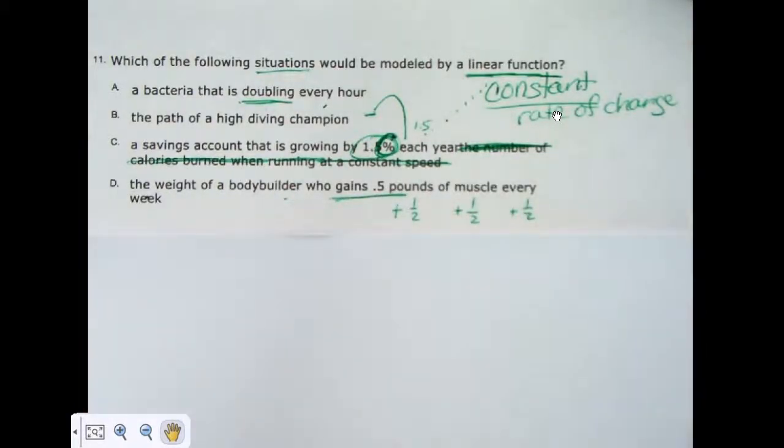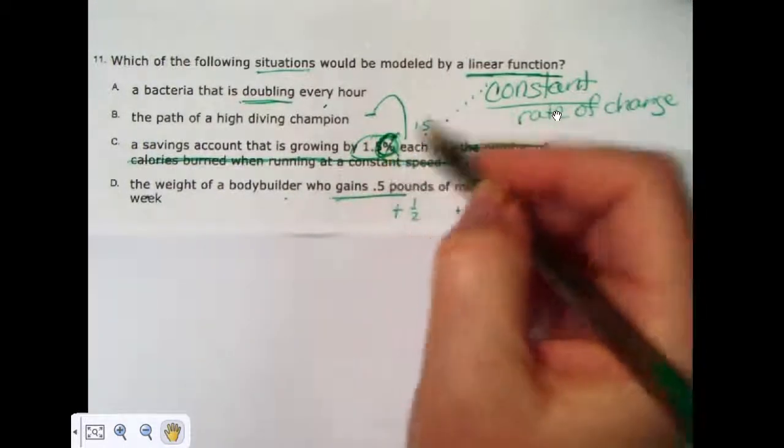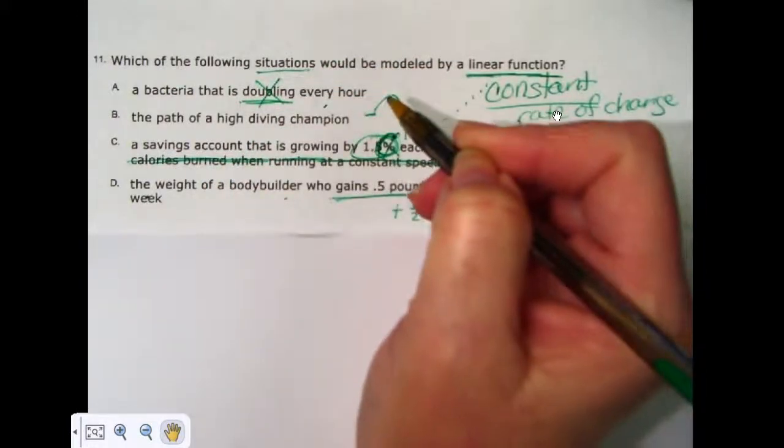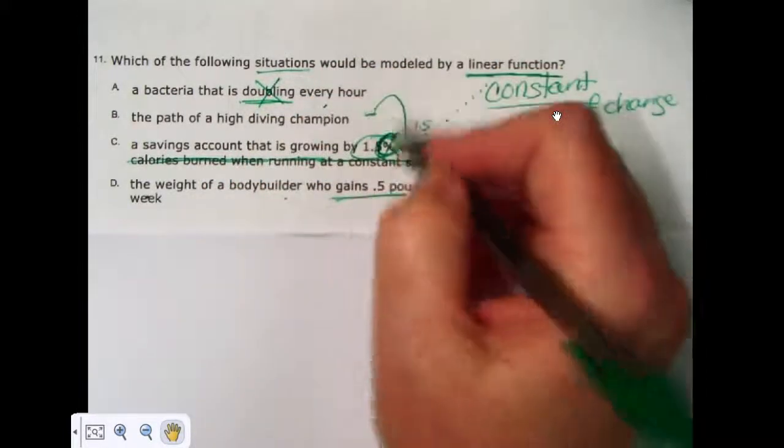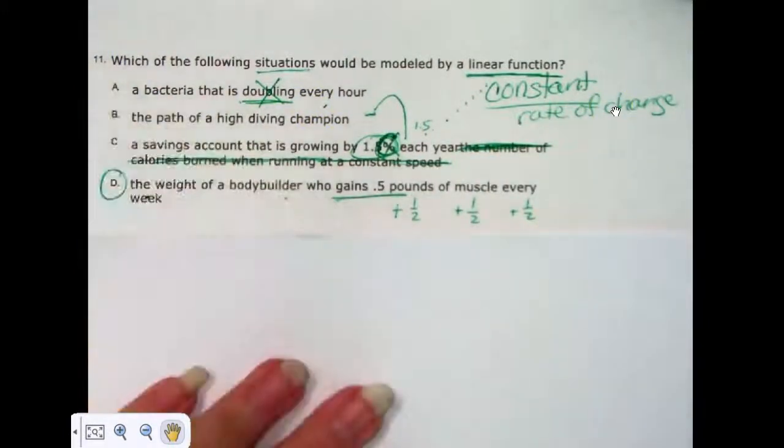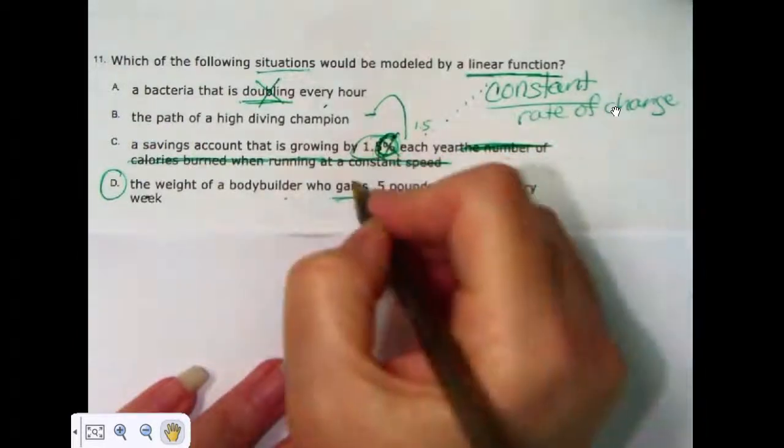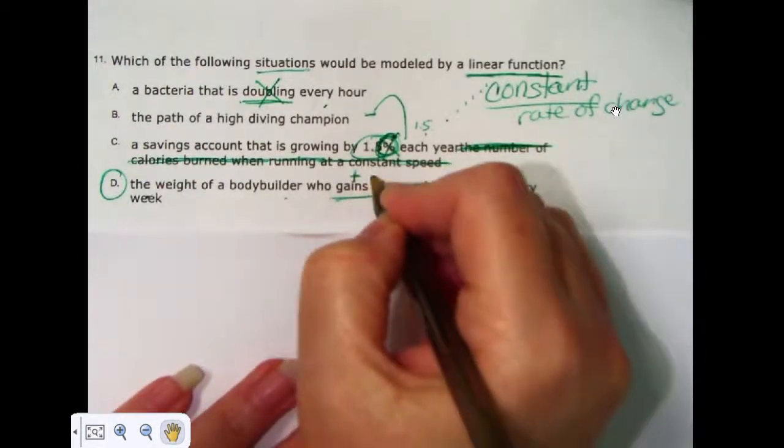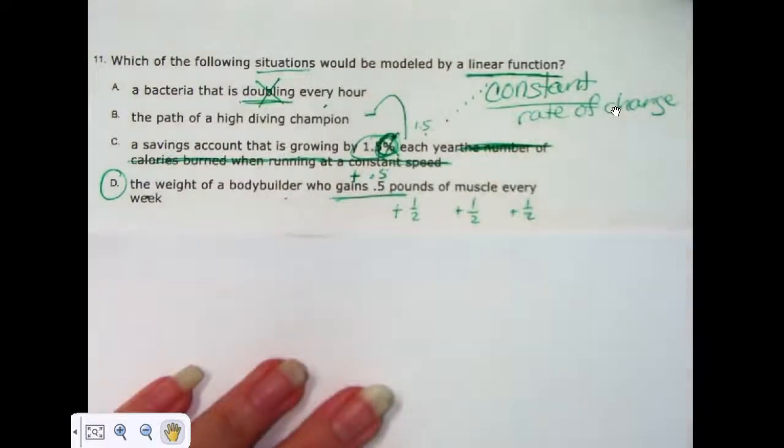So look for the situation that's going to add or subtract the same thing, the same exact number. Not a percentage, not a doubling or tripling, and nothing that would look like a parabola. And that's all I have to say about that. Perhaps I should be very clear and say that the correct answer is D because we are adding 0.5 every week.